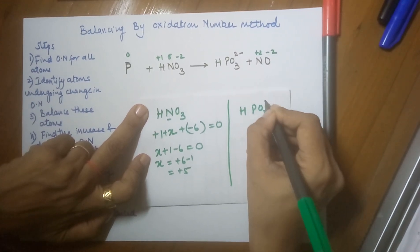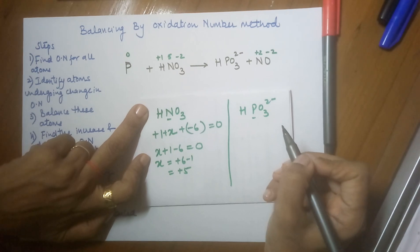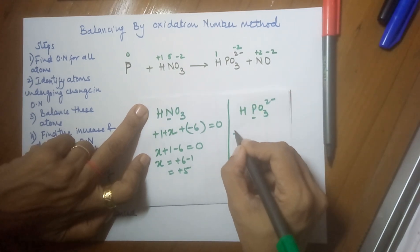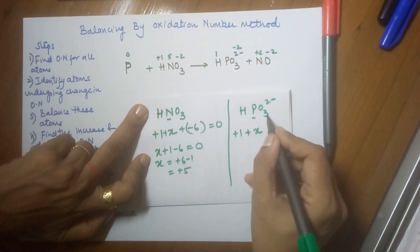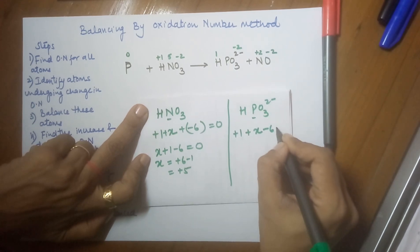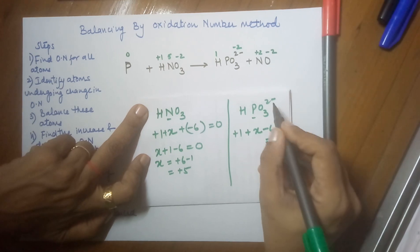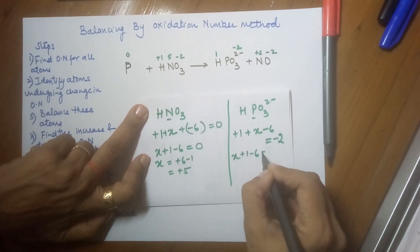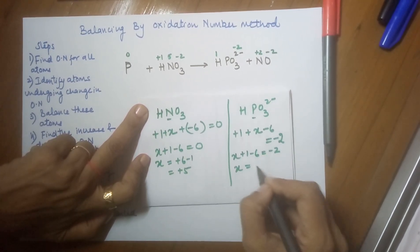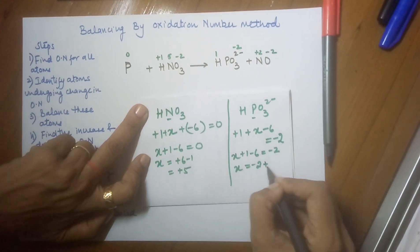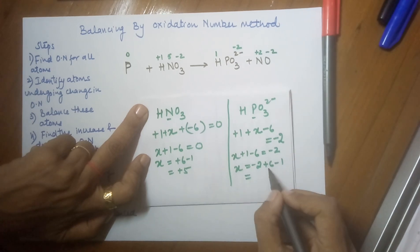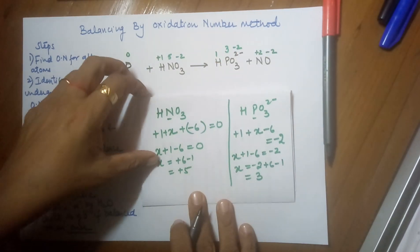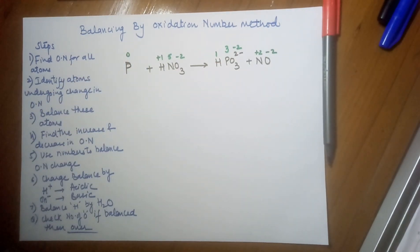Moving to HPO3(2-): let me find the oxidation number of phosphorus. For hydrogen it is plus one, for oxygen it is minus two. So: x (phosphorus) plus one (hydrogen) minus six (three oxygens times minus two) equals minus two, because there is a charge of minus two on this ion. So x plus one minus six equals minus two, giving x equals three. So the oxidation number for phosphorus is plus three.